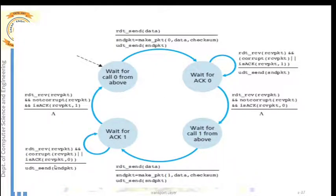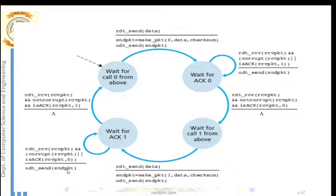Again the negative condition is checked: if the received packet is corrupted, or if a positive ACK with the wrong sequence number is received — expecting ACK 1 but getting ACK 0 — in all these cases the sender retransmits the packet with sequence number one.